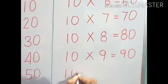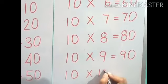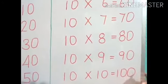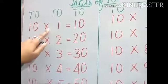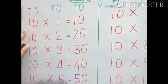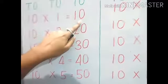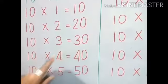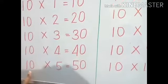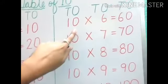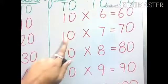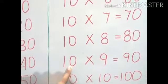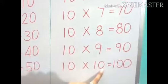The last one: 10, 10s are 100. Here I have written on two sides but you will write the table on one page from 1 to 10. So recapping: 10, 1s are 10. 10, 2s are 20. 10, 3s are 30. 10, 4s are 40. 10, 5s are 50. 10, 6s are 60. 10, 7s are 70. 10, 8s are 80. 10, 9s are 90. 10, 10s are 100.